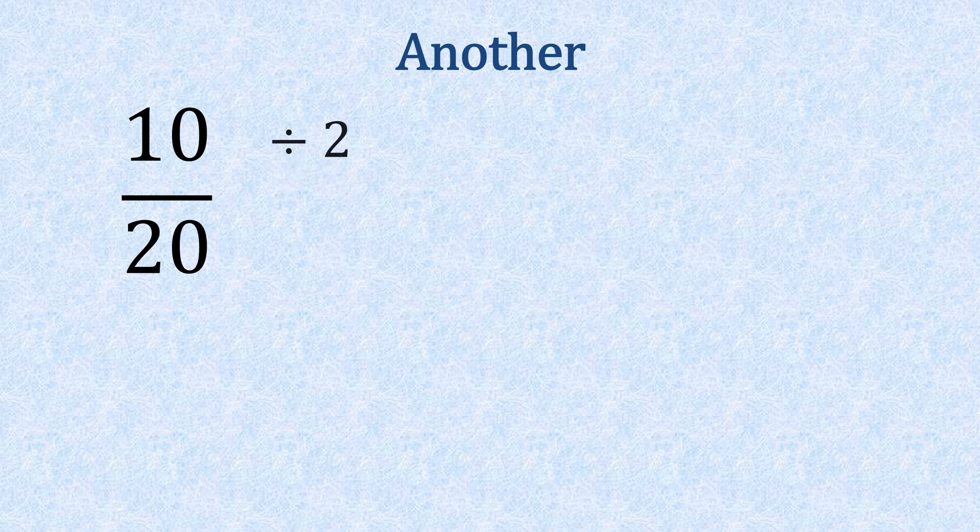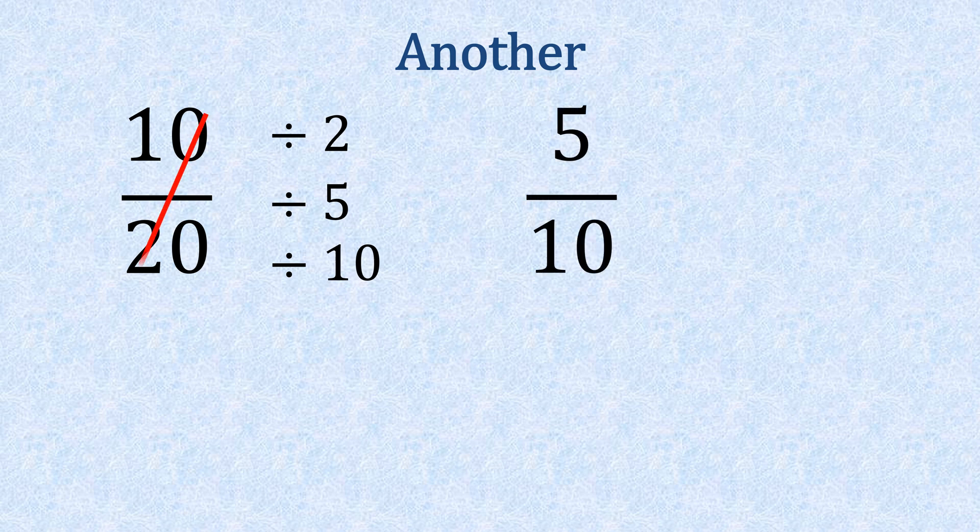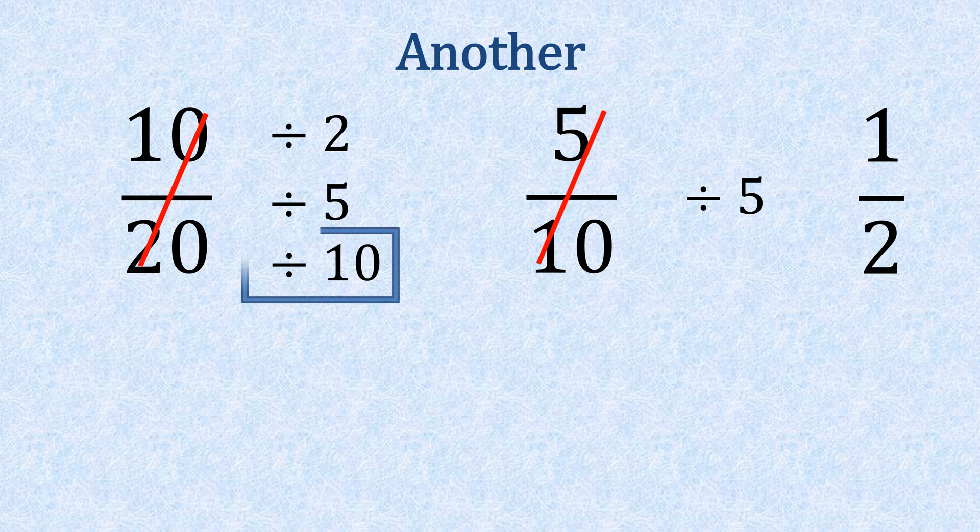Let's do another fraction. If we had ten twentieths, we know this can be divided by two, five, or ten. If we divided it by two, that gives us five tenths. And then if we divided that again by five, fives into five go one, fives into ten go two, giving us one half. But if we divided by ten straight away, we would have got straight to one half.